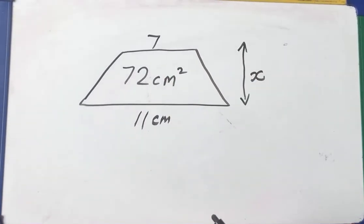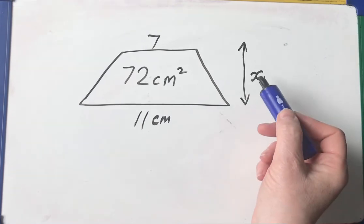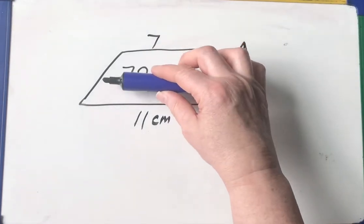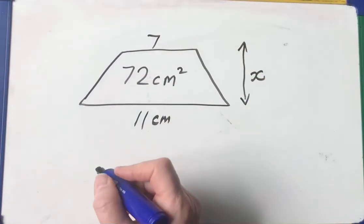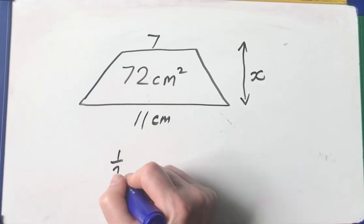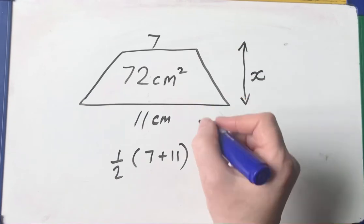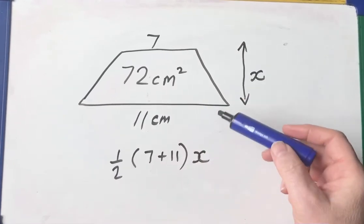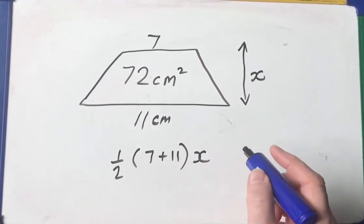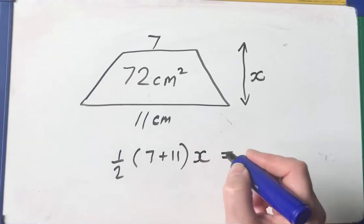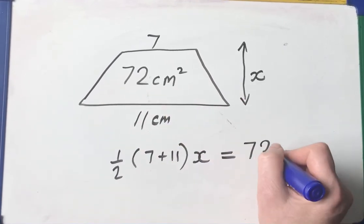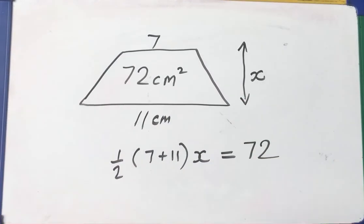we want to calculate the perpendicular height, the space between them. So we know that if we were given that and we weren't given that, we'd have to say half the sum of the parallel sides times the space between them. Well, the space between them is x. That's the best I can do at the moment, but I am told that the area is 72.